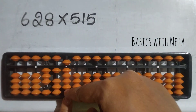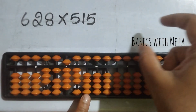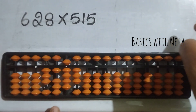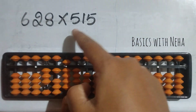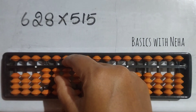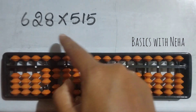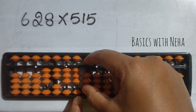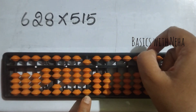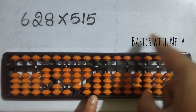2 ones are 2 — zero two. 2 fives are 10 — one zero. Now 8 into 515 — start from the fourth rod. 8 fives are 40 — to place four here it is plus ten minus six, and zero. 8 ones are 8 — it is zero eight. 8 fives are 40 — to place four here it is plus ten minus six, and zero. So the answer is 323420.